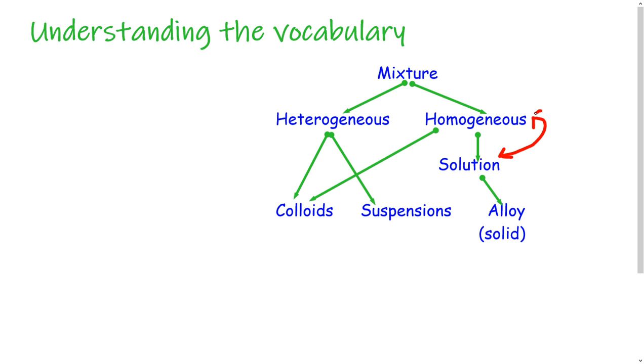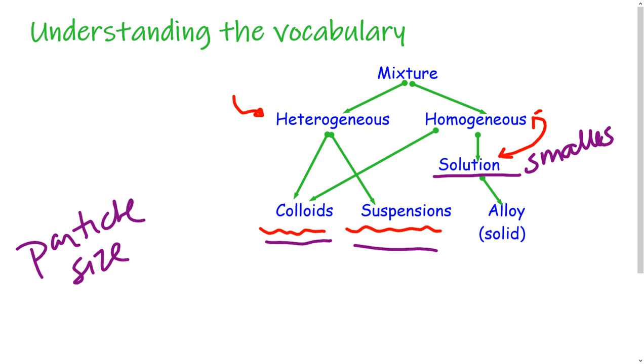You will find that the term heterogeneous mixture has subcategories called colloids and suspensions. When we consider what these mean, when we look at the standpoint of solutions, colloids, and suspensions, the particle size will vary from one to the other. You will find that a solution has particle sizes that are the smallest, colloids will be medium in size, and suspensions will be the largest.